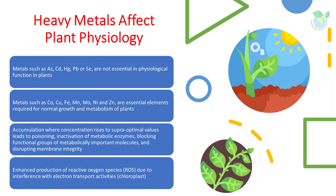Some of these heavy metals, such as arsenic, cadmium, mercury, lead, or selenium, are not essential, since they do not perform any known physiological function in plants. Others, such as cobalt, copper, iron, and zinc, are essential elements required for normal growth and metabolism of plants.